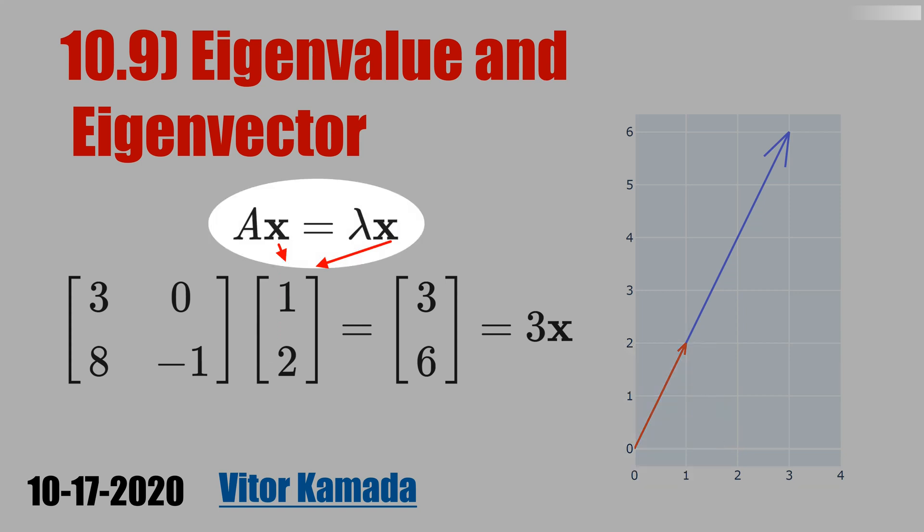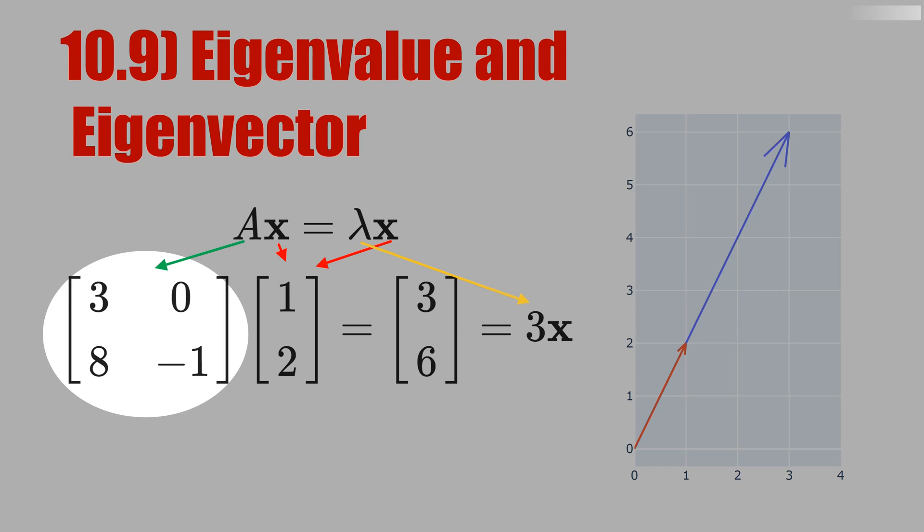If you have x on both sides of the equation, A has to equal lambda, but A is this matrix here, 2 by 2, and lambda is a scalar, in this example the number 3. Therefore, you are claiming that this matrix A has the same function as the scalar 3.